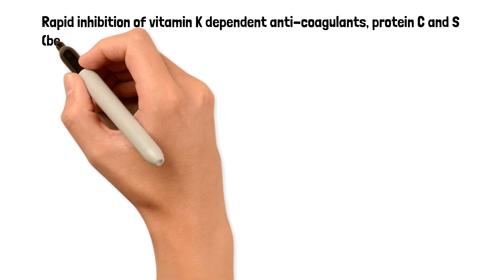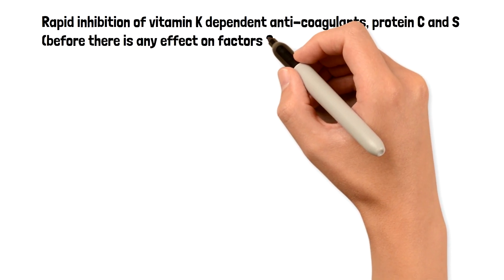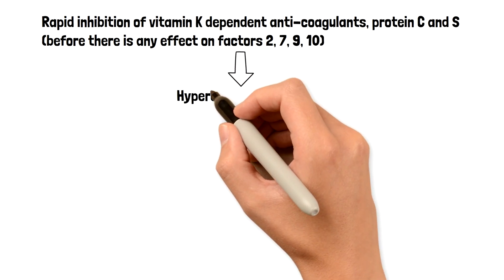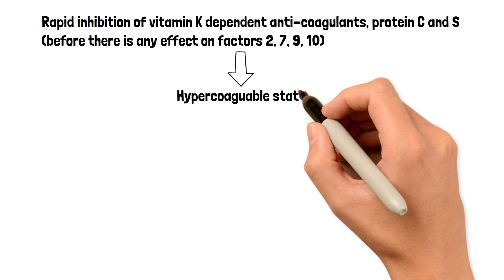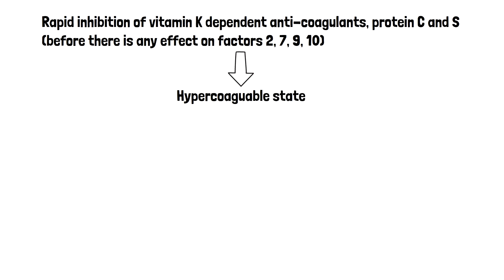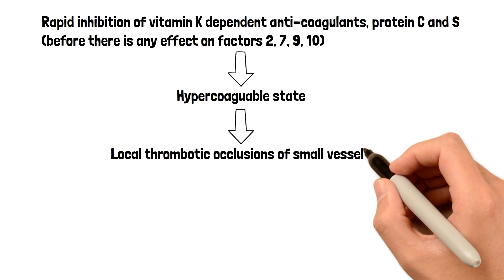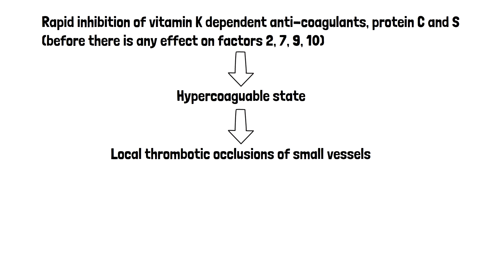Here's what happens in the cascade: there is rapid inhibition of vitamin K-dependent anticoagulant proteins C and S before there is any effect on factors 2, 7, 9, and 10. Because of this, for a period of time you're going to have a hypercoagulable state — which is exactly what you're not trying to achieve. And because of this hypercoagulable state, you're going to have local thrombotic occlusions of small vessels.